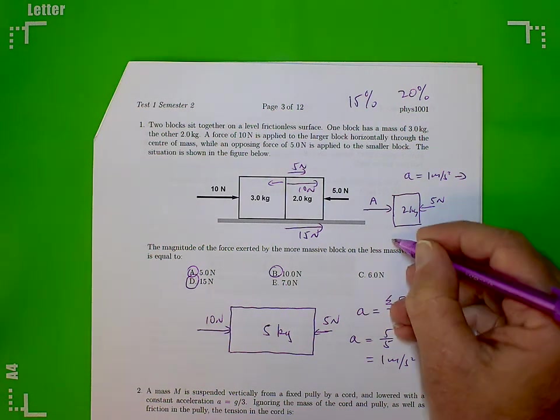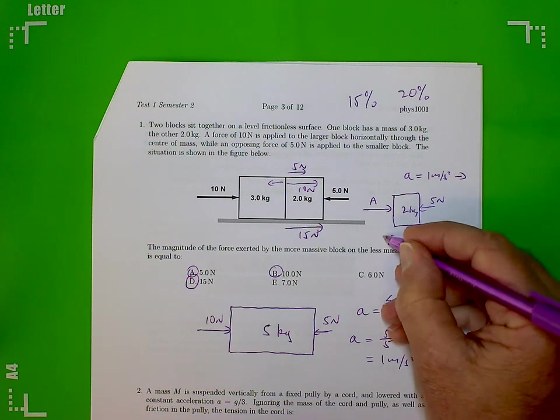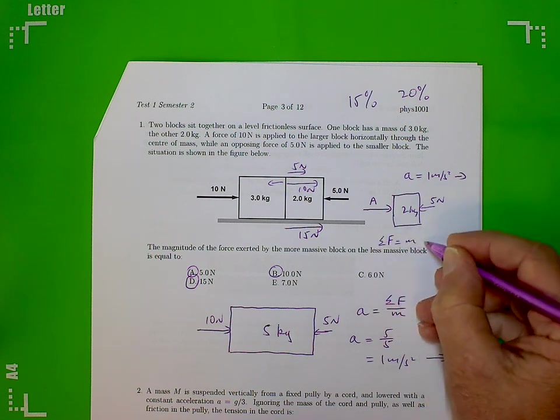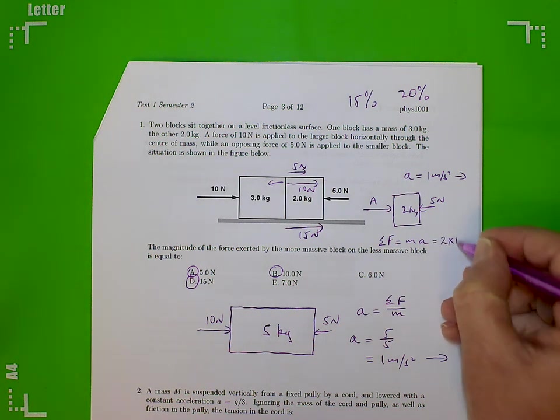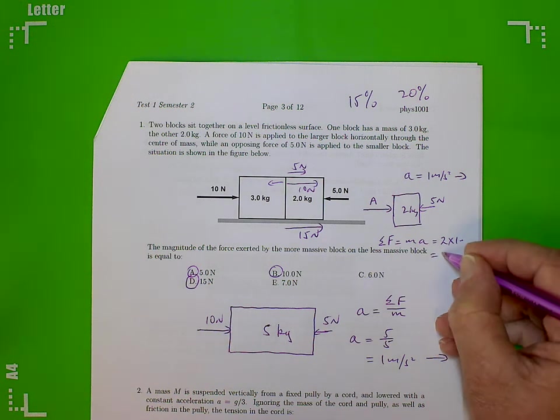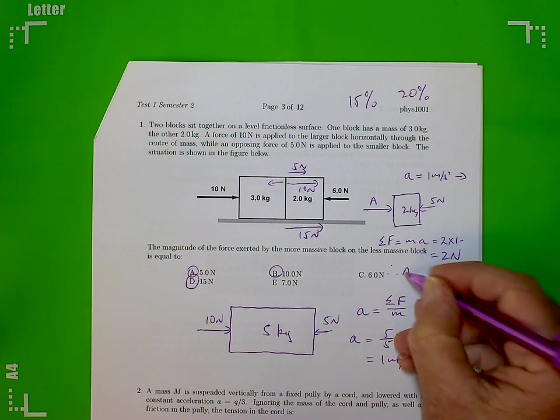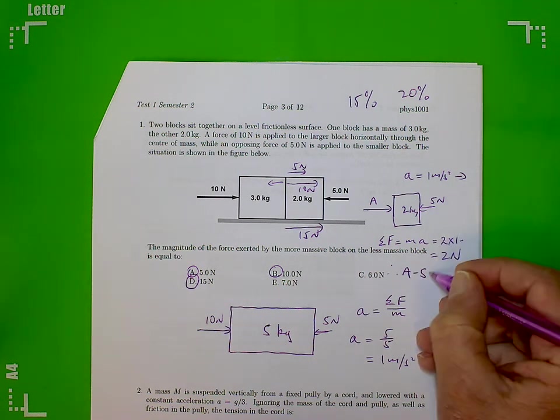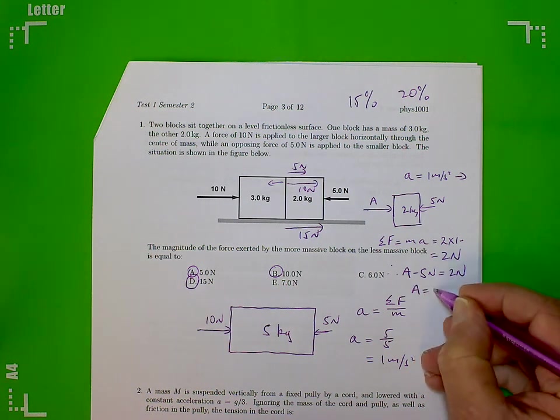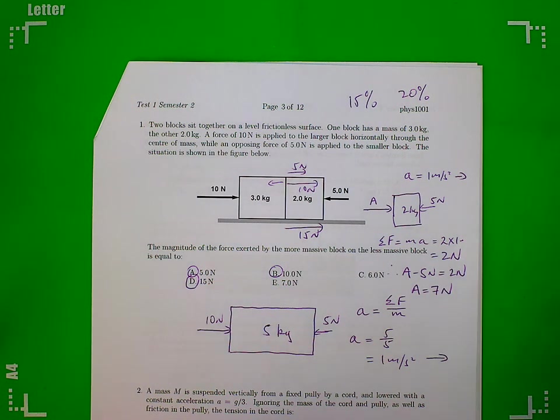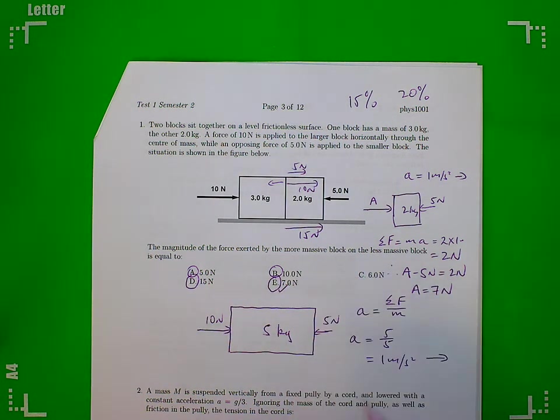So applying Newton's laws we say, all right, F - this net force on that block - is equal to mass times acceleration, which is equal to 2 kilograms times 1 meter per second squared, which is 2 newtons. That is, we have the net force, which is A to the right subtract 5 newtons to the left, is equal to 2 newtons. So therefore A is equal to 7 newtons. Okay, so the answer is 7 newtons. That one's correct.